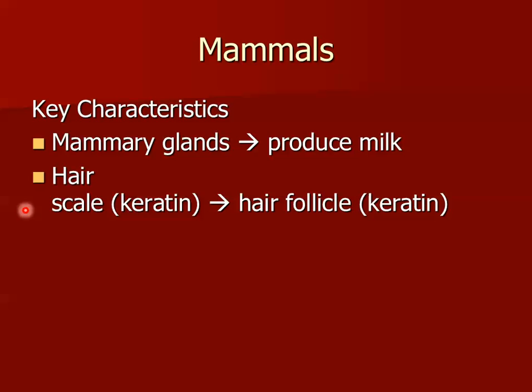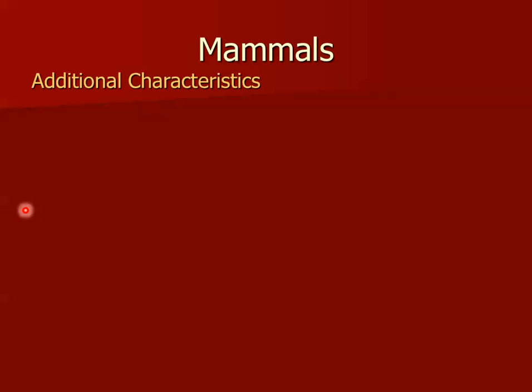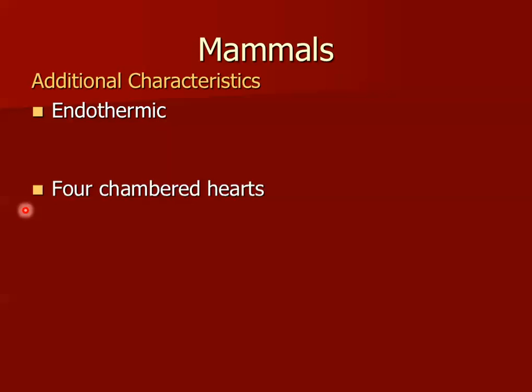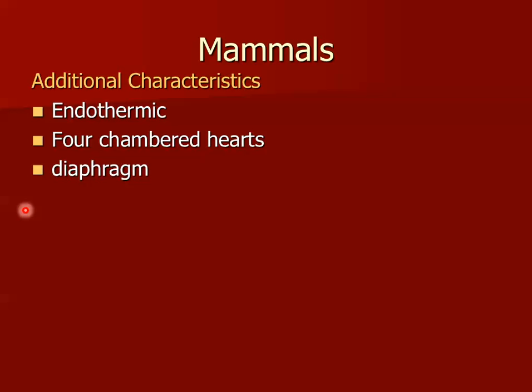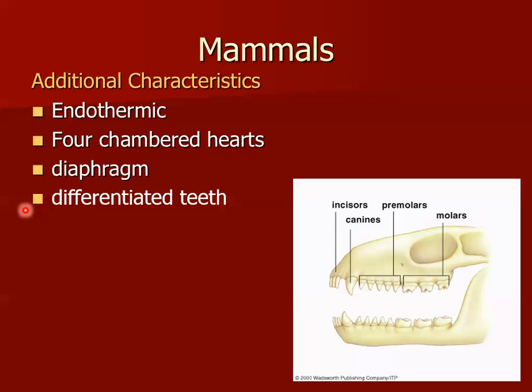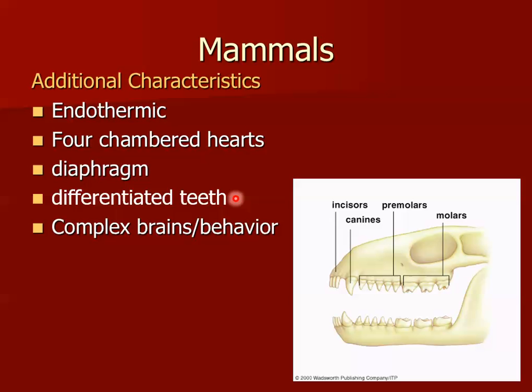Additional characteristics of mammals: they are endothermic. They have four-chambered hearts, just like birds, because they have high metabolic needs. They have a diaphragm, which enables them to expand their lungs more easily to meet their high metabolic needs. Mammals have differentiated teeth — incisors, canines, premolars, and molars — which you'd recognize from the dentist. Reptilian skulls do not have differentiated teeth. And mammals, like birds, have complex brains and behavior.